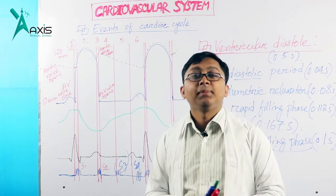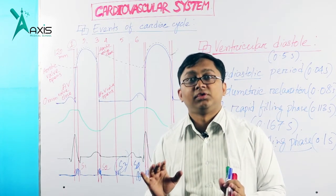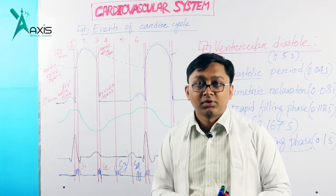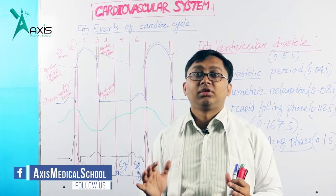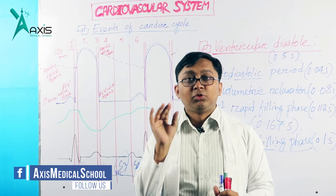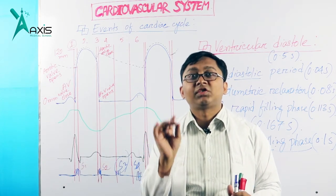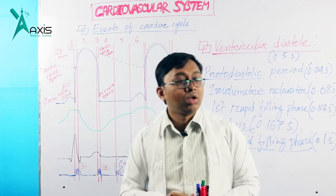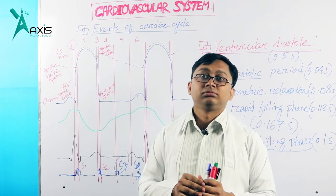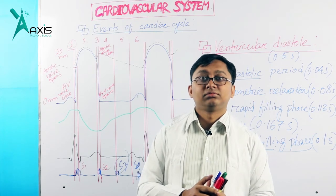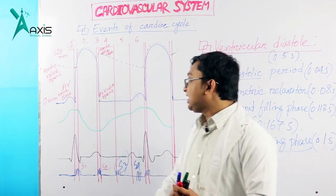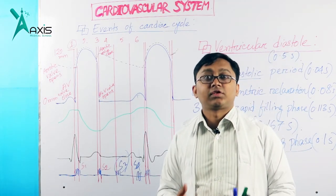S3 is due to volume overload condition, while S4 is due to pressure overload conditions such as left ventricular hypertrophy, aortic stenosis, or hypertrophic obstructive cardiomyopathy (HOCM). These conditions increase pressure overload in the left ventricle, and in these types of conditions, we sometimes hear S4. These are the events of ventricular systole and diastole.